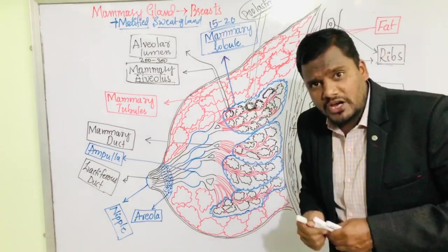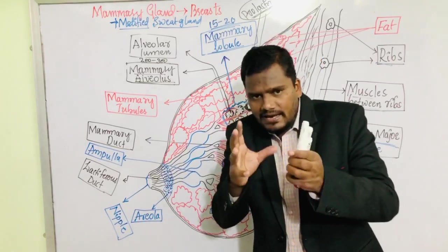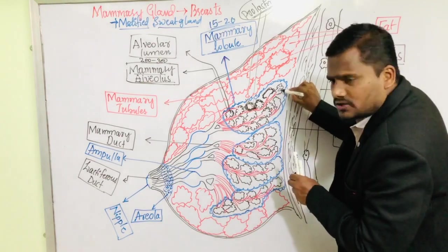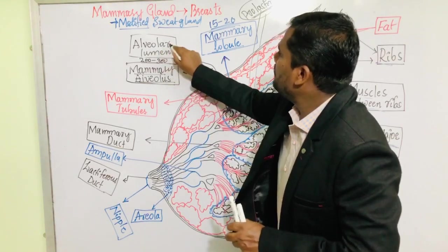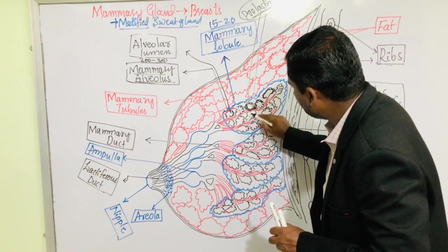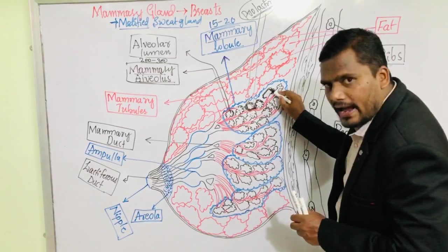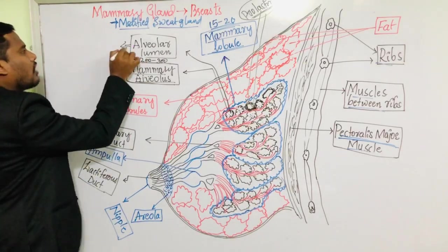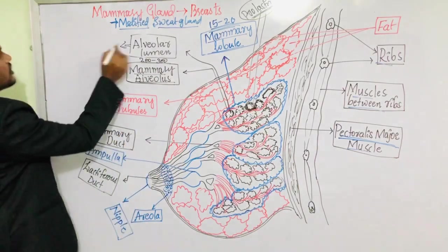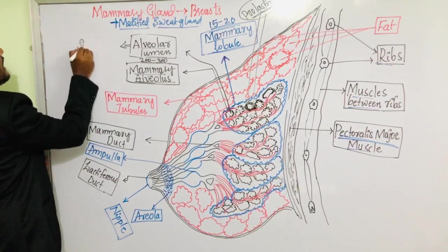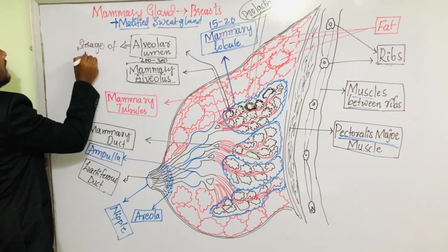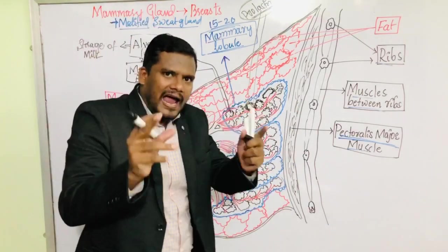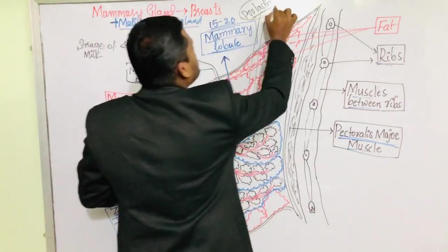Whatever milk is produced initially, it will not come out immediately. Initially it is stored inside a free space called the alveolar lumen. The cells of the alveoli secrete the milk, and initially that milk is stored in the alveolar lumen. The main function of the alveolar lumen is storage of milk — this was asked in a previous GPMER examination. Prolactin stimulates milk production and is secreted by the pituitary gland.